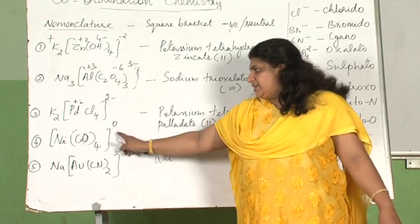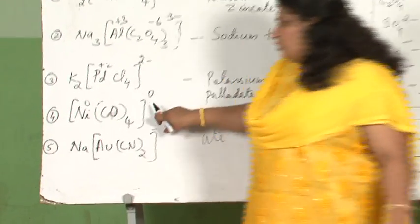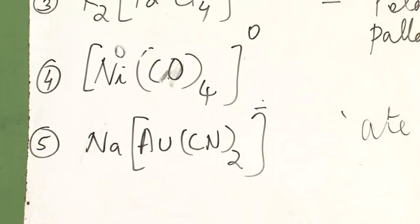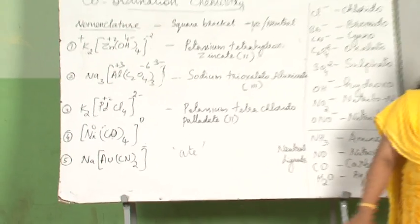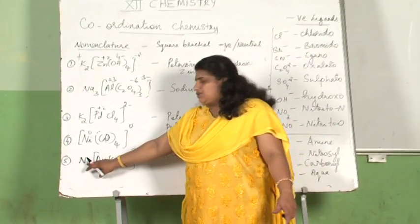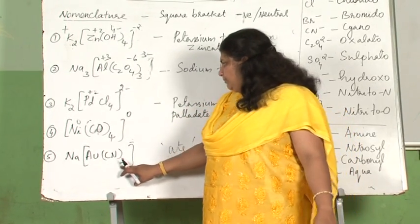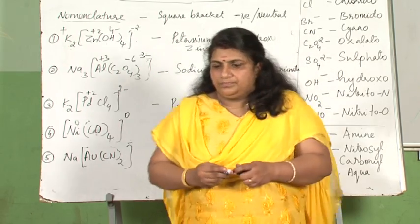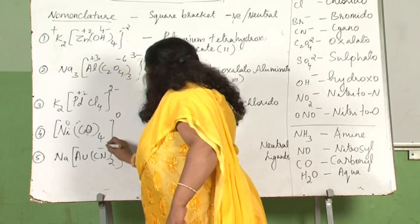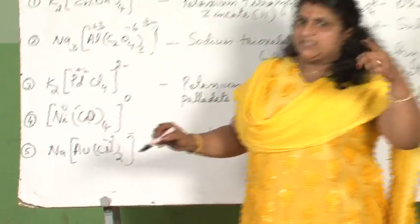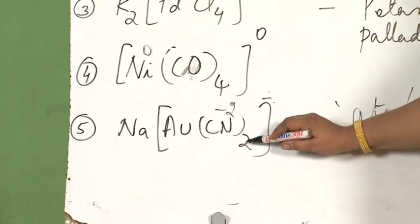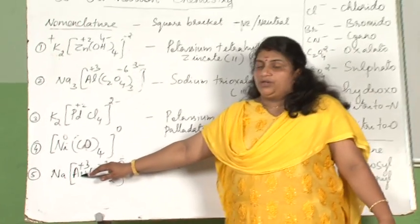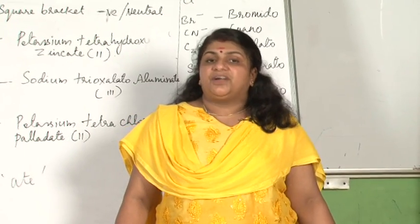For Ni(CO)₄: the oxidation state of nickel is zero since the square bracket charge is zero. So no need to write the oxidation state. The name is tetracarbonylnickel. For Na[Au(CN)₂]: this is sodium dicyanoaurate. Cyanide is minus 1 each; two cyanides give minus 2 total. The complex charge is minus 1, so the oxidation state of gold is plus 1. The name is sodium dicyanoaurate(I).